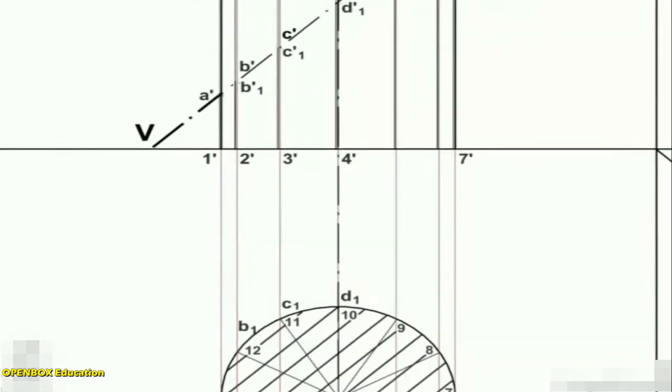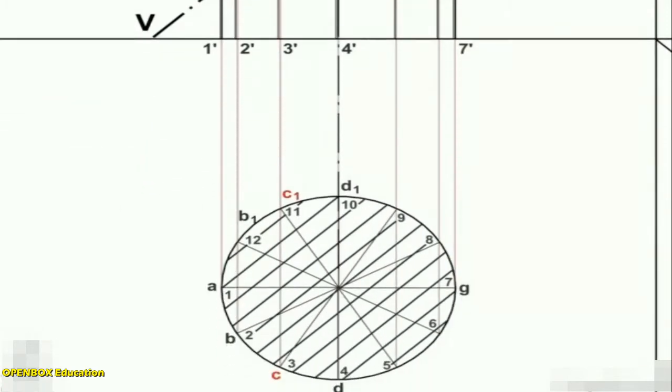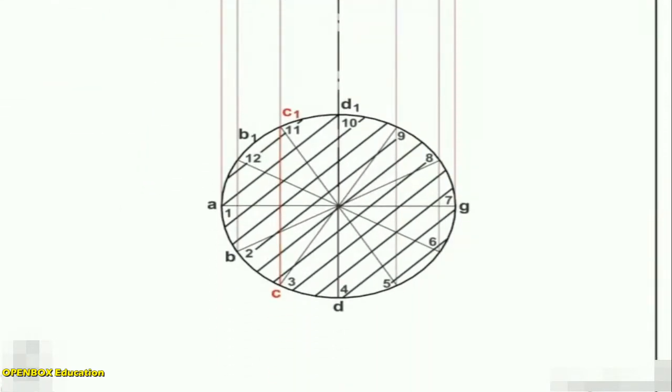The width of the section at any point, say C', will be equal to the length of the chord CC1 in the top view.